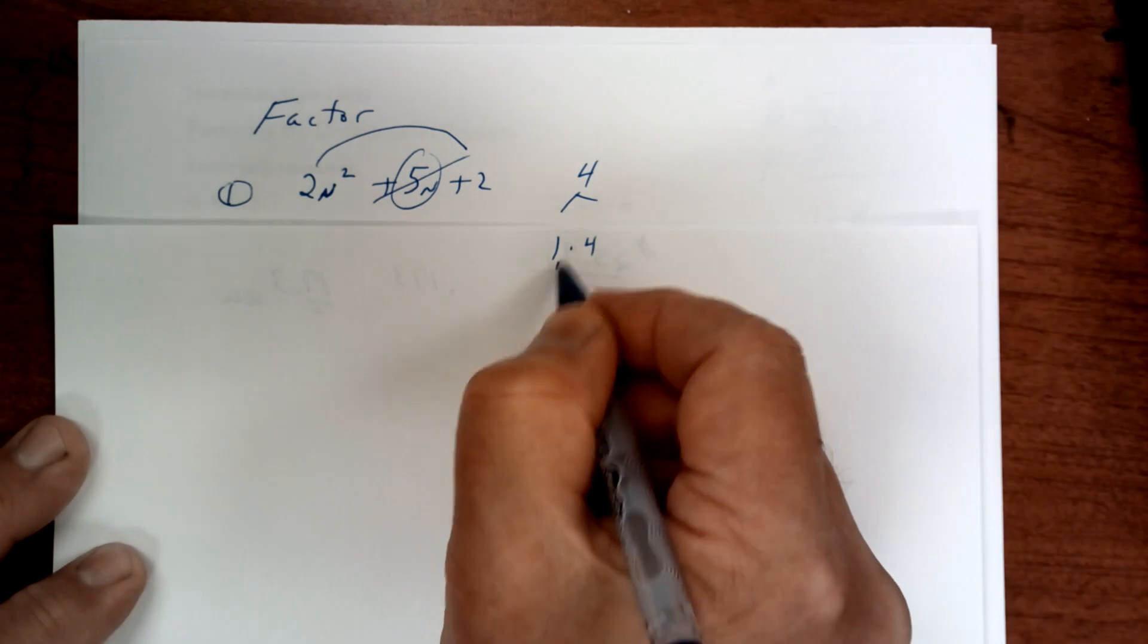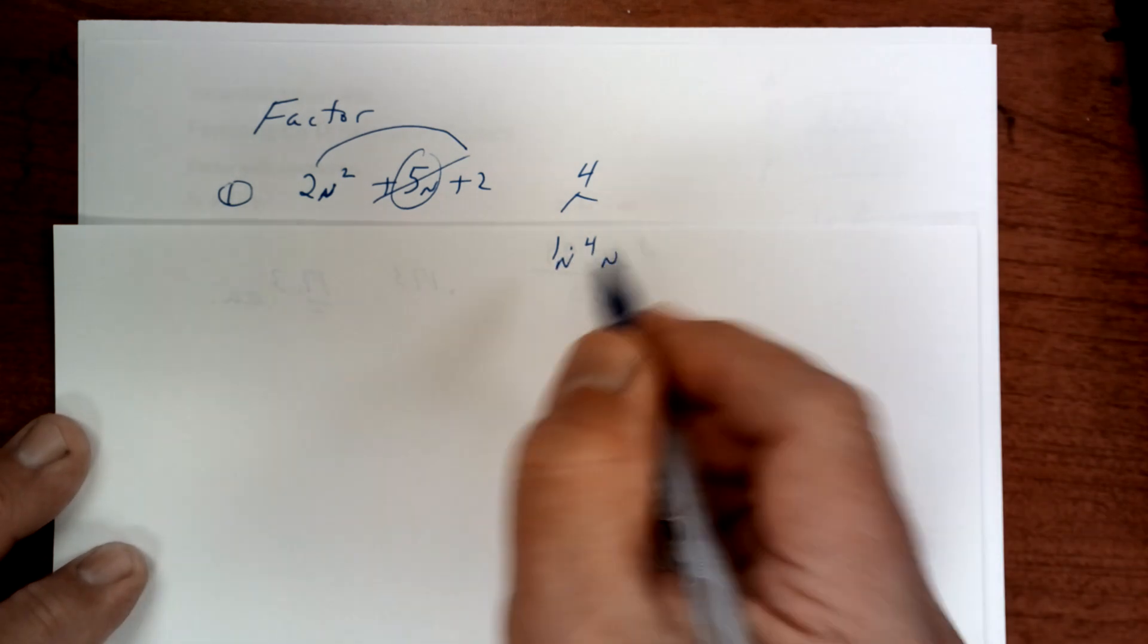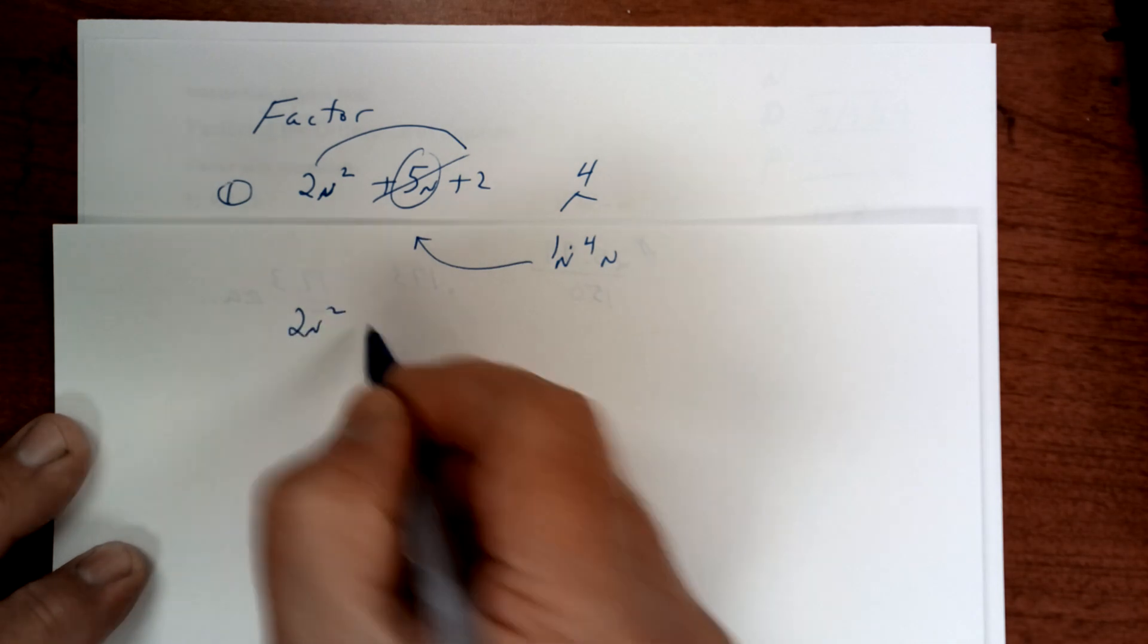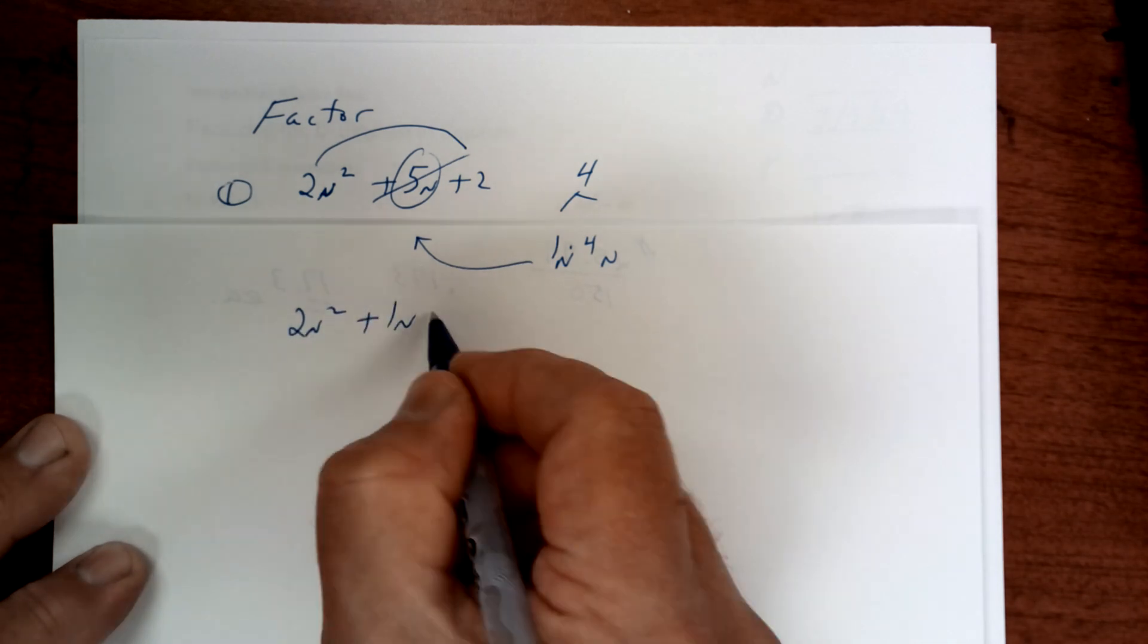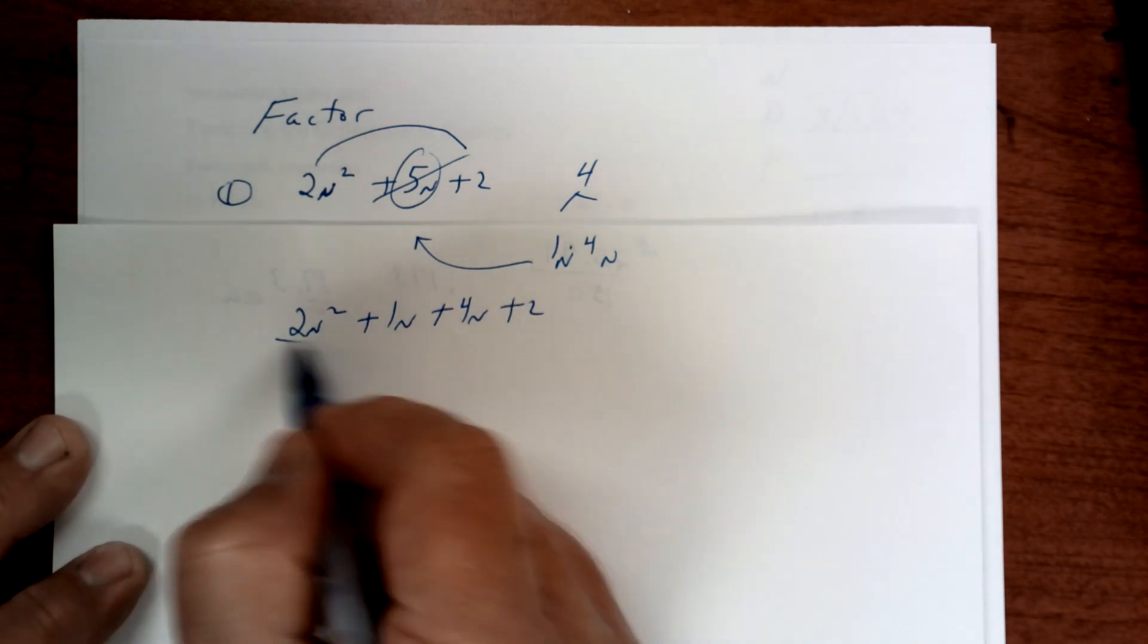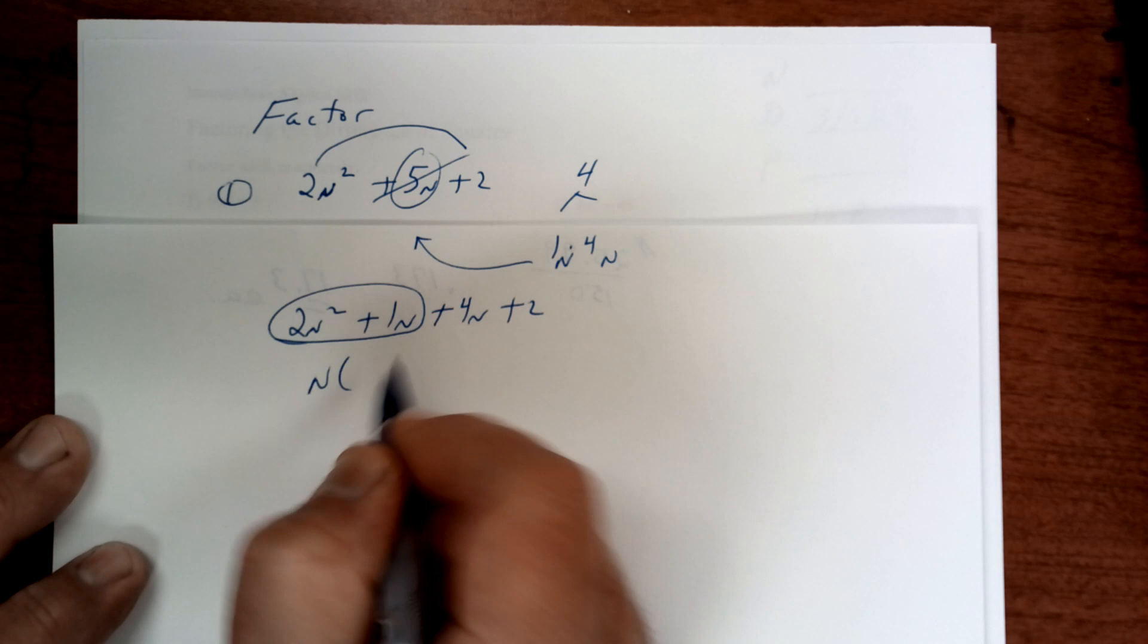So you're going to change this to 1n and 4n right here. So you're going to say 2n² + 1n + 4n + 2. Then you're going to factor this by taking an n out, so you're left with 2n + 1.